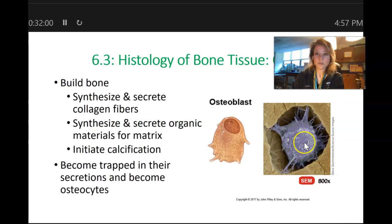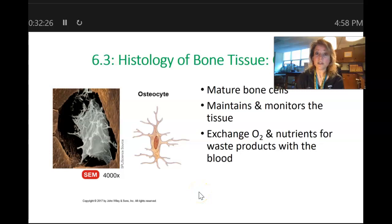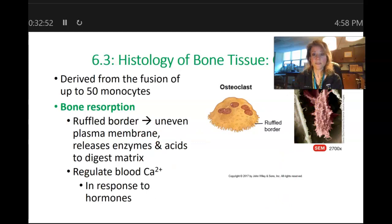The osteoblasts then become mature osteocytes — mature bone cells. The osteocytes are the maintenance workers of bone: their job is to maintain and monitor the tissue. They exchange oxygen and nutrients like calcium from the blood in order to help maintain the bone, and their waste products go back into the blood where they're taken away. So the osteocytes do have a blood supply to allow the exchange of materials.